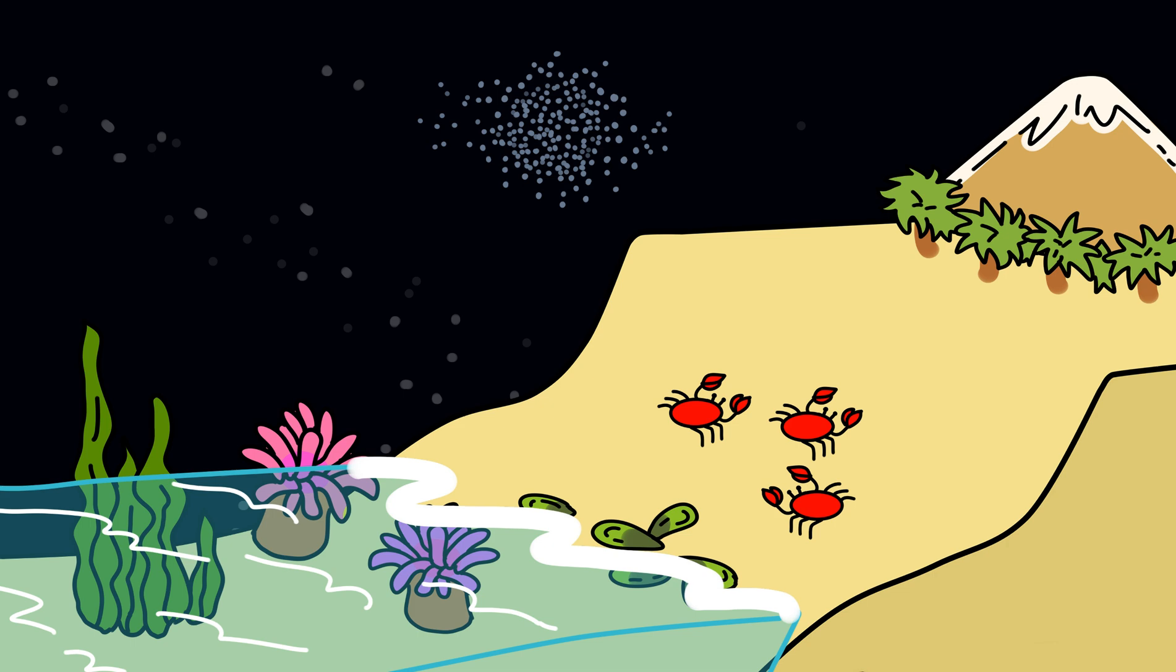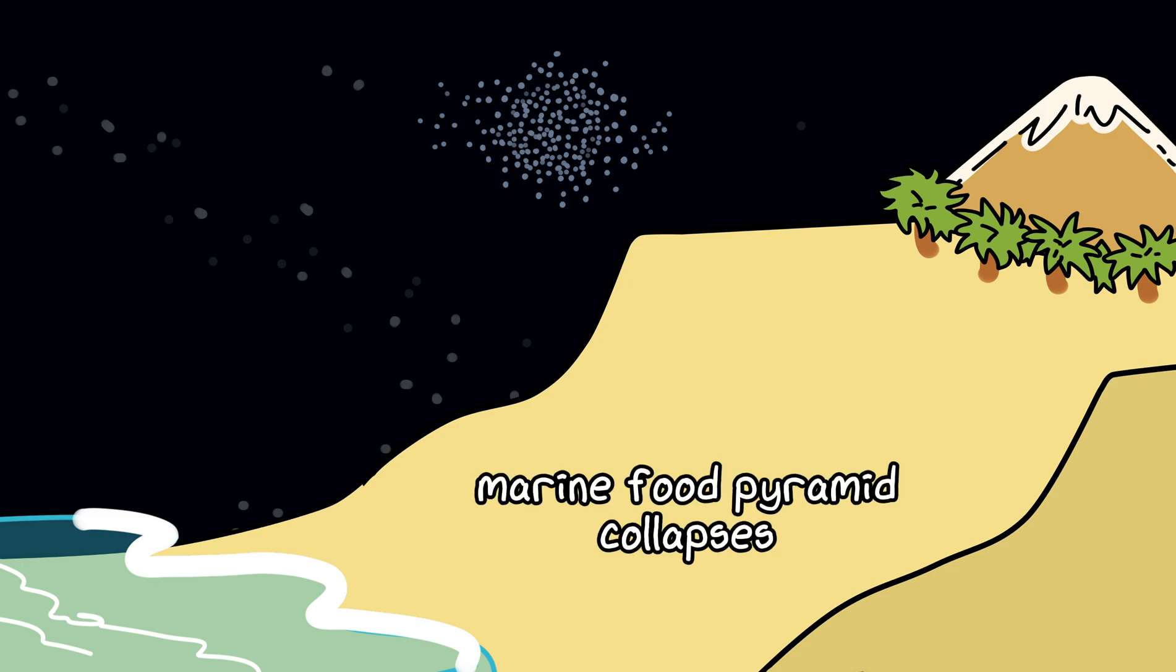Lose them, and intertidal creatures like crabs, mussels, anemones, and seaweed will vanish, taking the food web down with them.